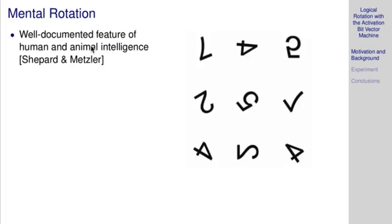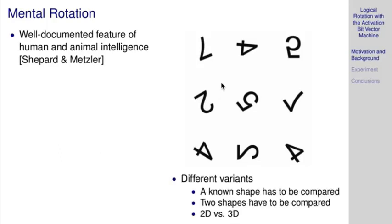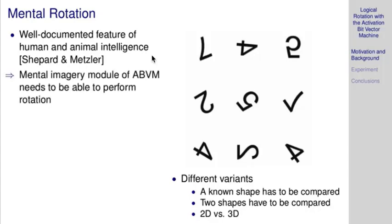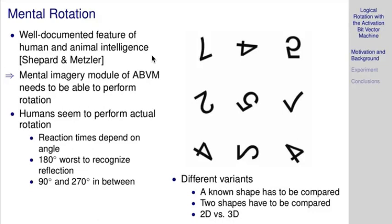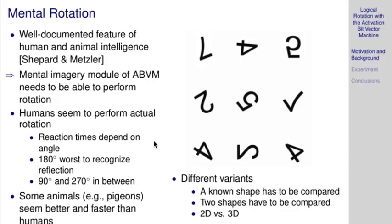Mental rotation is a well-documented feature of human and animal intelligence, of mental imagery generally. Here's a standard test: the task is to check whether the symbols are rotated or are flipped, mirrored. There are different variants—you can have it in 2D and 3D. The activation bit vector machine, if it has comparable mental imagery, should be able to perform rotations. Humans actually seem to perform rotations—reaction times depend on the angle. Some animals seem actually better and faster than humans; they may not be doing rotation but having some other mechanisms.